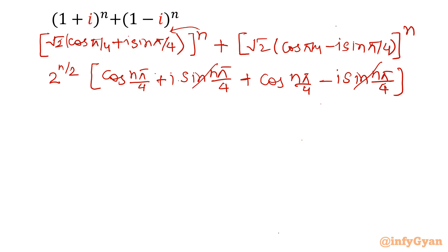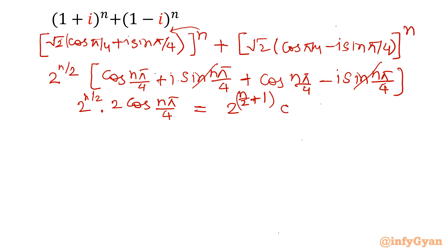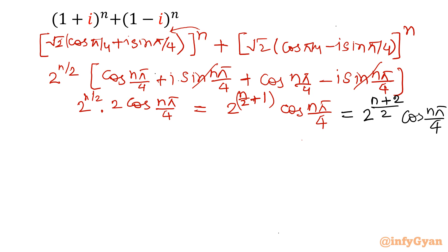The imaginary terms cancel out, leaving 2 cos(nπ/4). Combined with the 2^(n/2) factor and multiplying by 2, we get 2^(n/2 + 1). Taking LCM, the exponent becomes (2n + 2)/2, so we can write this as 2^((n+2)/2) · cos(nπ/4), which equals (root 2)^(n+2) · cos(nπ/4).